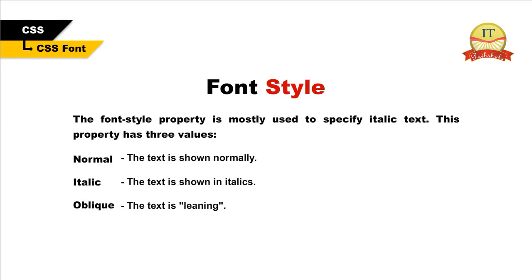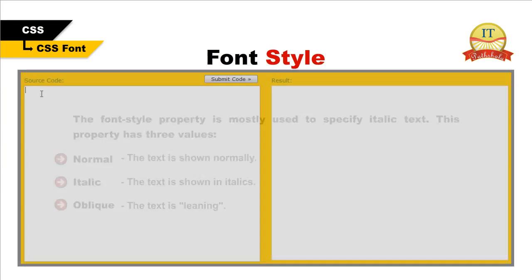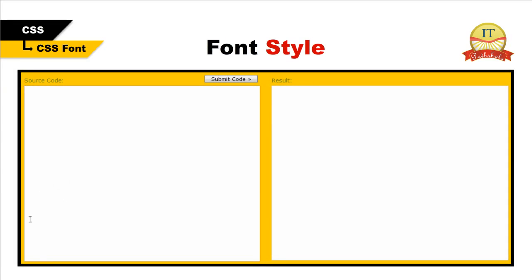The font-style property is mostly used to specify italic text. This property has three values: Normal — the text is shown normally; Italic — the text is shown in italics; Oblique — the text is leaning. Oblique is very similar to italic but less supported. Let us look at an example to understand it.